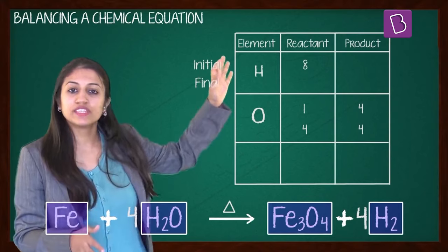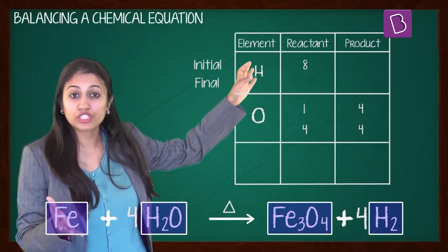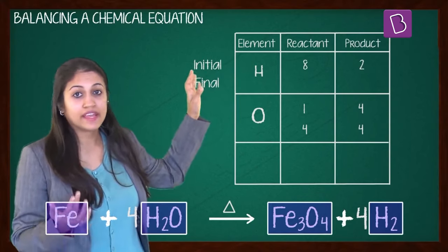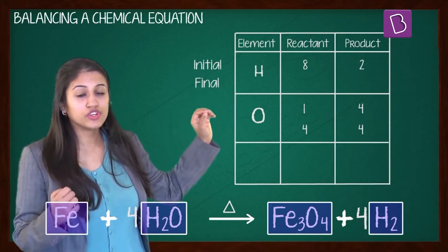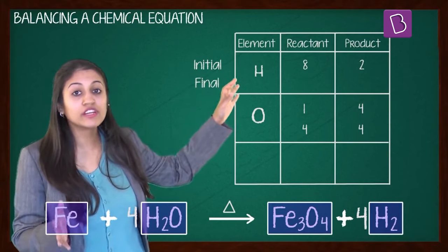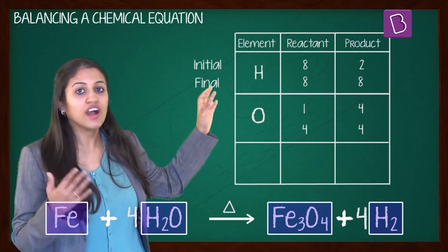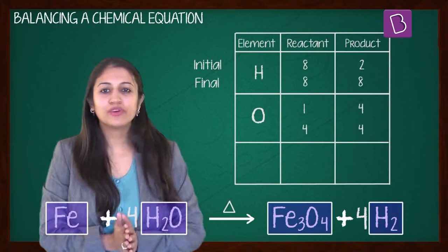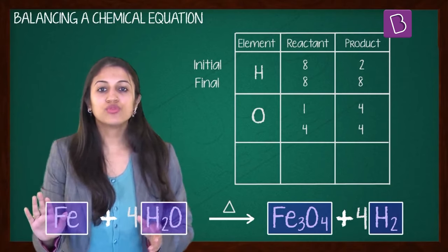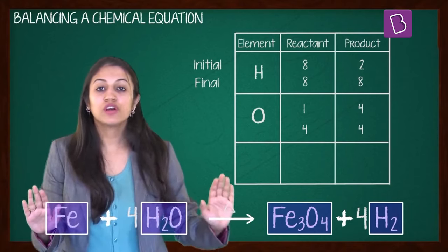In the reactants, you can see that you have 8 in 4H2O. And in products, you have 2 in H2. So to balance it, in the reactants it's anyway 8, but in the products you will make it 2 into 4 or 4 molecules of hydrogen. What happens to the equation now? It becomes Fe plus 4H2O giving you Fe3O4 plus 4H2.